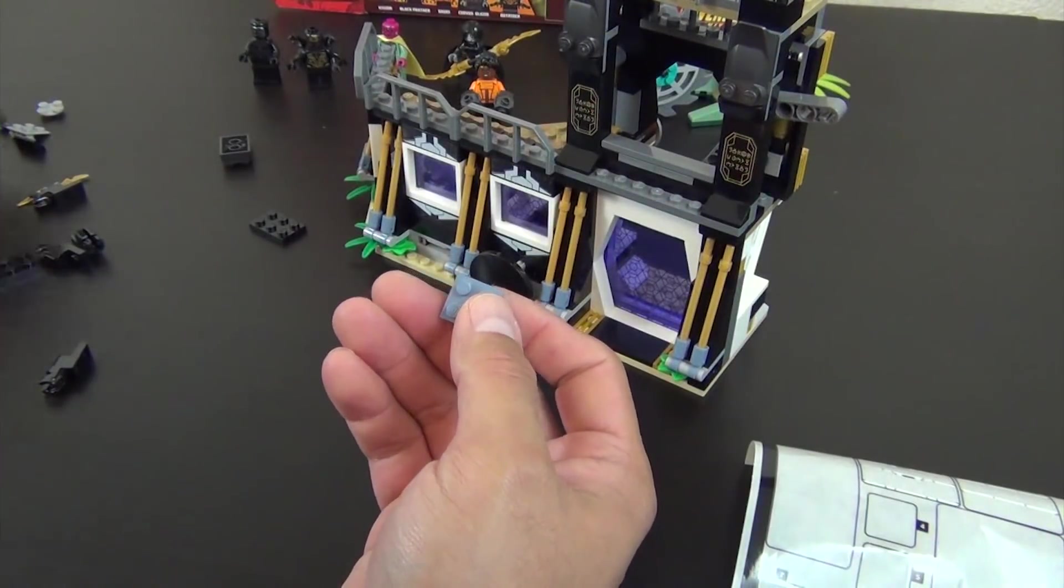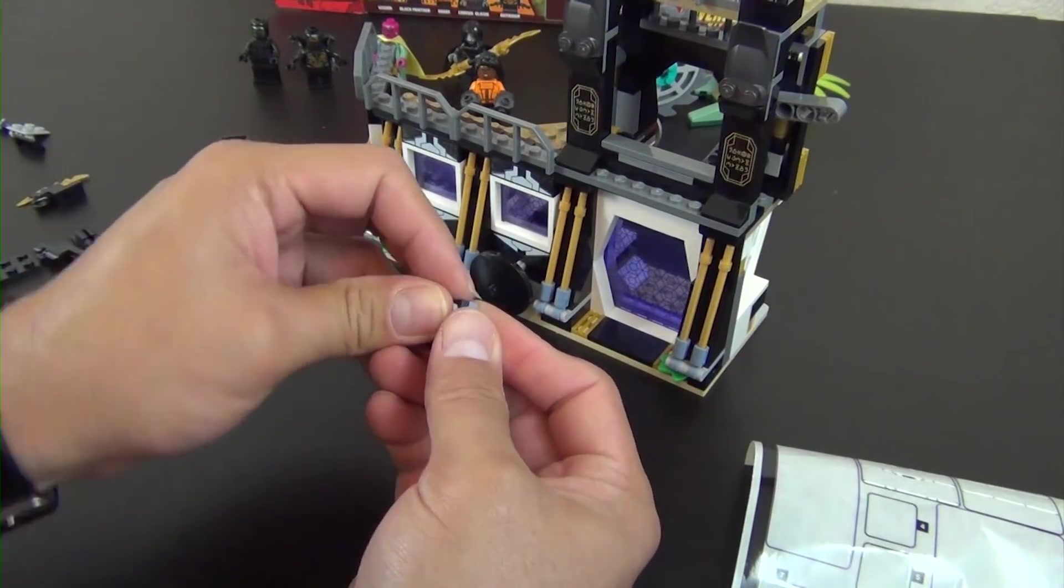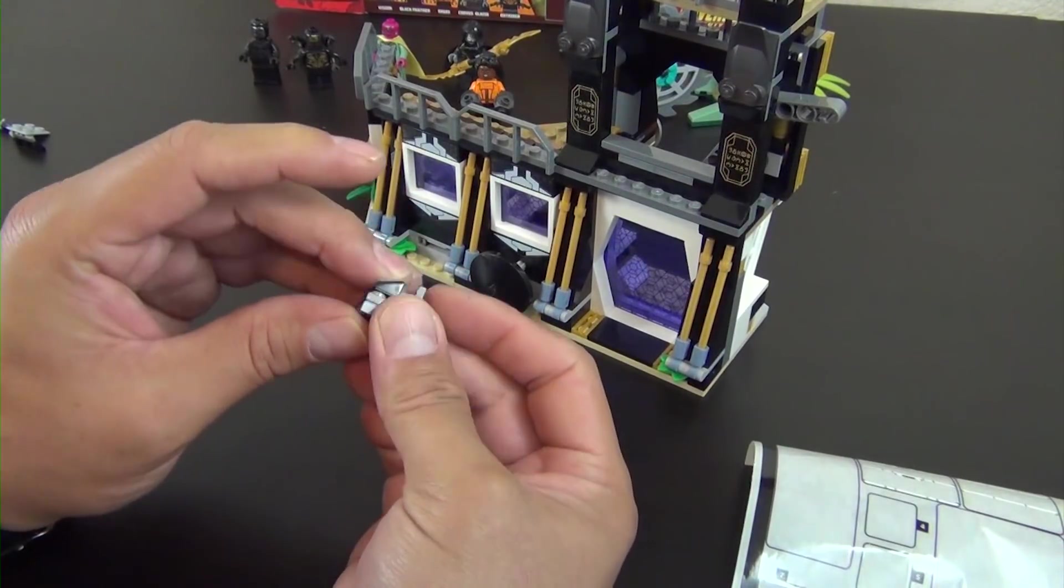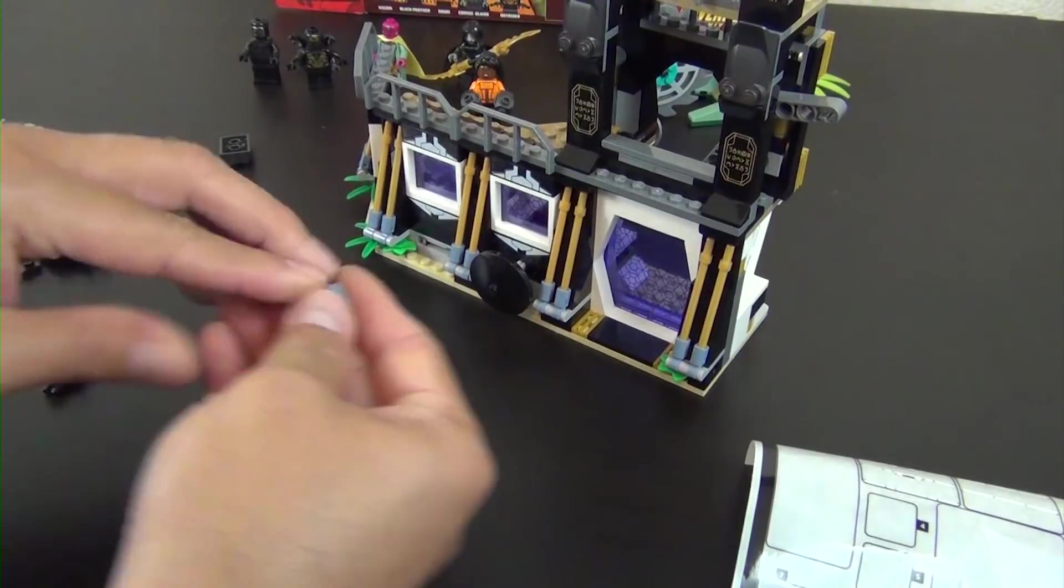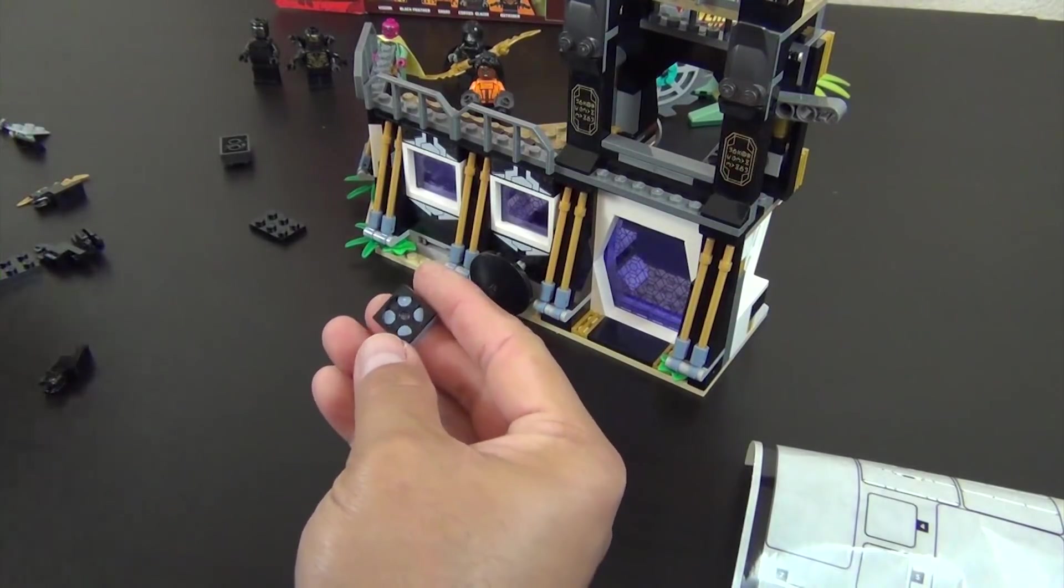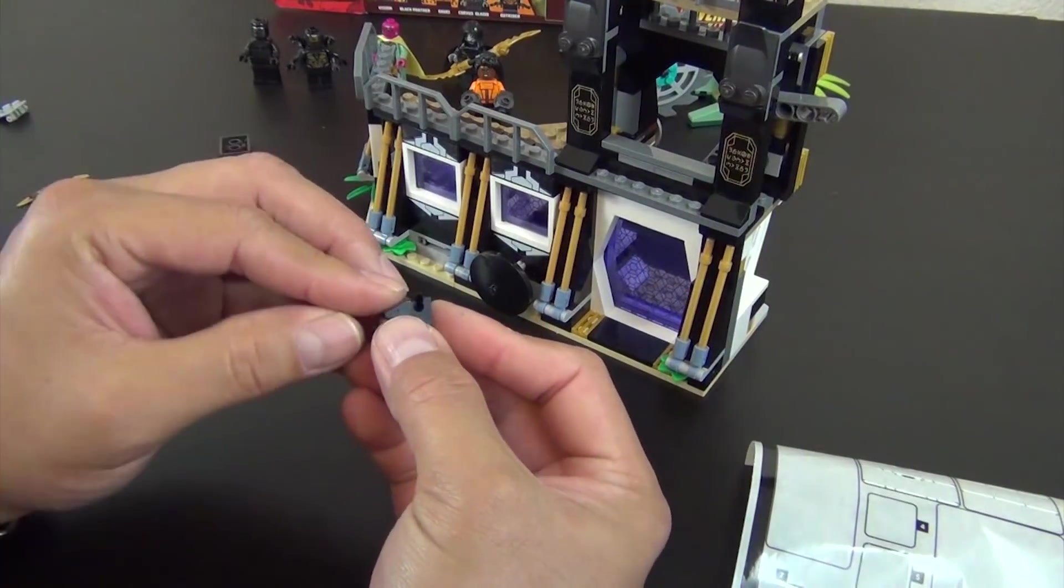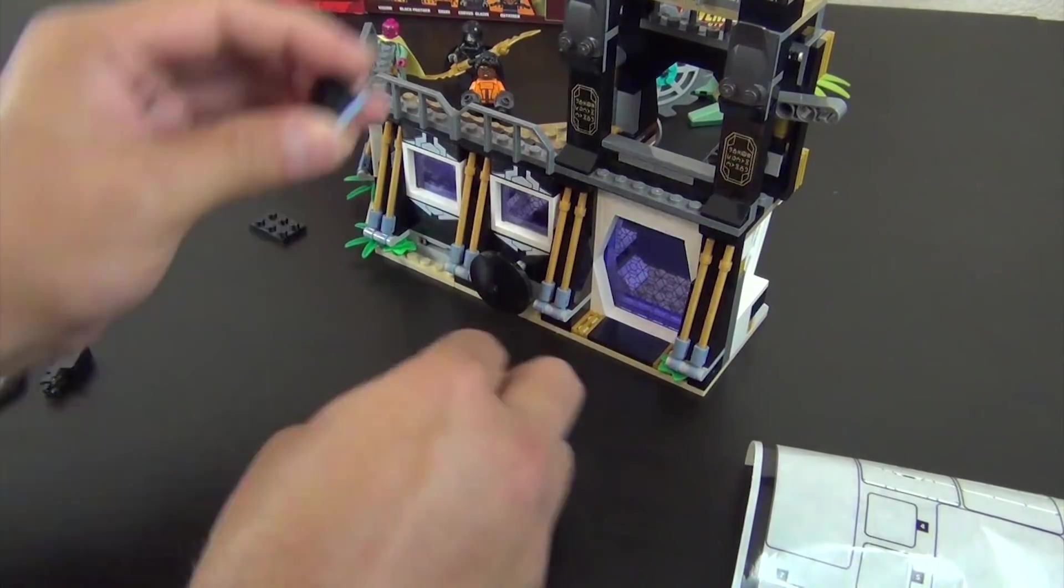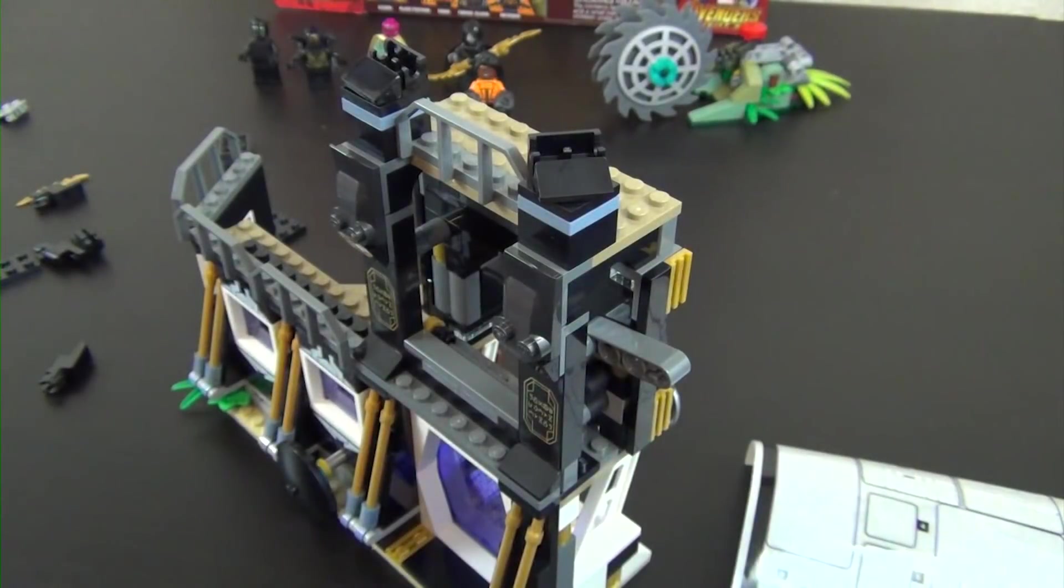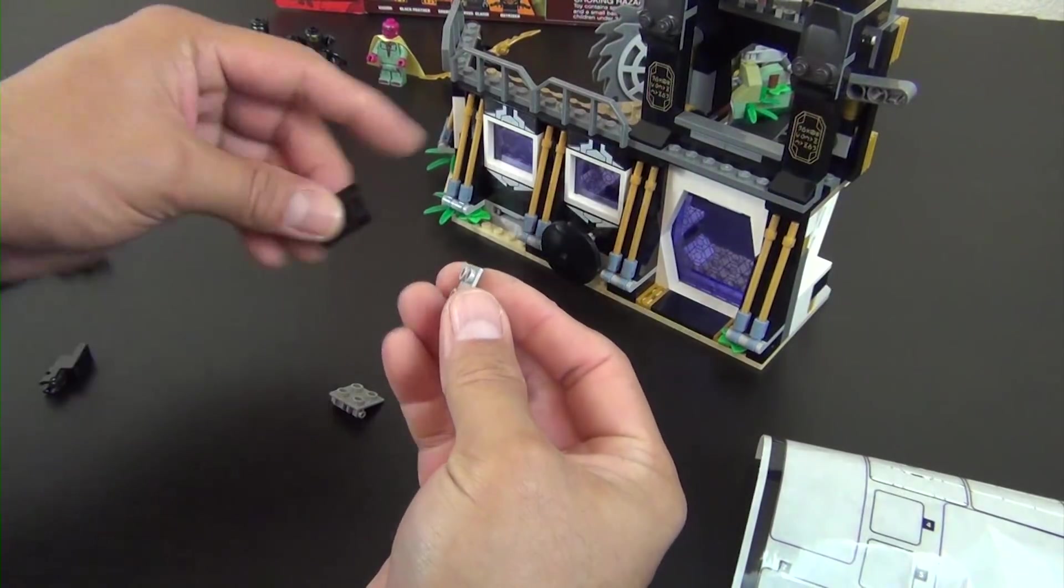So we have a two-times build. We have this turntable plate with the turntable in it. Okay, these both go here. So we got a little turret action there. Move that to the side. We have another two-times build.